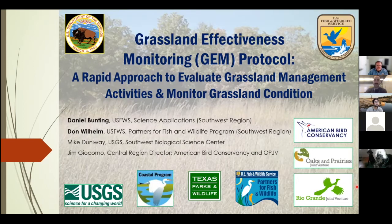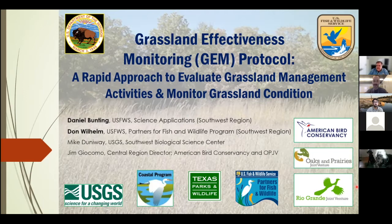Don Wilhelm is the Regional Coordinator for the Partners for Fish and Wildlife Program in the U.S. Fish and Wildlife Service Southwest Region, spanning Arizona, New Mexico, Oklahoma, and Texas. He's worked for the U.S. Fish and Wildlife Service for approximately 30 years, spending the majority of his time working in support of habitat conservation on private lands. He has a bachelor's and master's degree in biology. Daniel and Don, I'll pass it to you to tell us about the Grassland Effectiveness Monitoring Protocol.